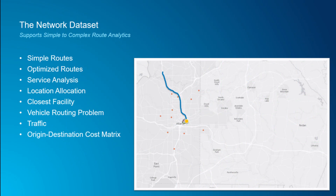The network dataset supports simple to complex route analysis. It allows me to generate, define, and locate simple routes — getting from X to Y, finding the best route. For optimized routes, say I've got 20 inspectors going out to inspect high-mast light poles — what's the best route for each inspector to take? I can do service drive time analysis, vehicle routing, and location allocation. For inspectors, I can analyze their work areas to determine if they're balanced, whether each worker has enough work and whether routes are generally equal.